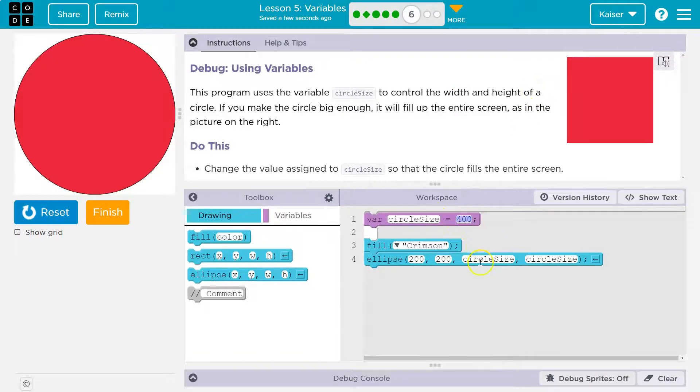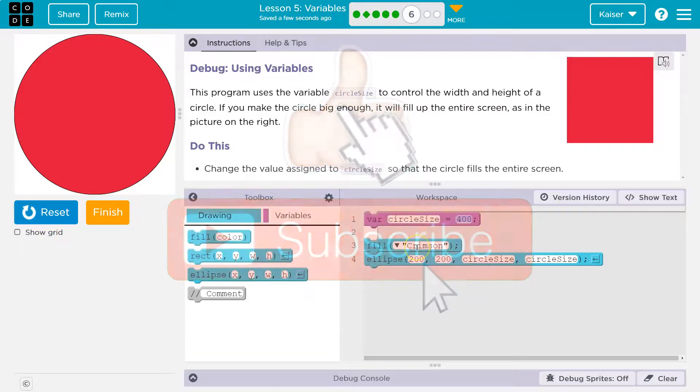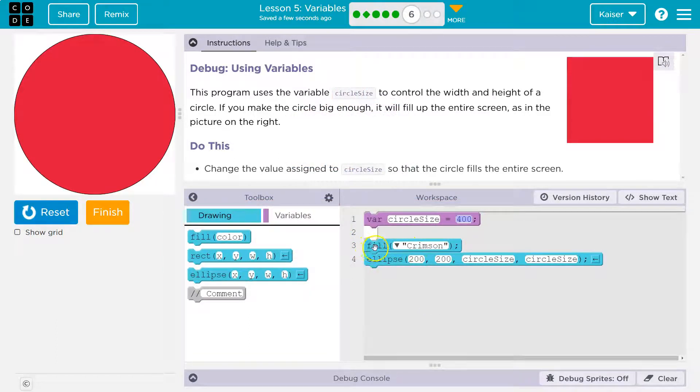Got it. And what it's talking about is we make this variable, we name it circle size. It's equal to 400. Now I say, hey, pick up some crimson color paint, right? So I tell it at line three, go ahead and pick up crimson paint or red color.